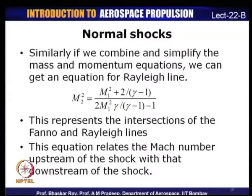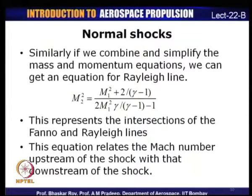Similarly, we can combine and simplify the mass and momentum equations to get the Rayleigh line equation, and correspondingly relate upstream and downstream properties. If we look at these two equations and simplify them, we can relate the downstream Mach number M₂ with the upstream Mach number M₁. We get: M₂² = (M₁² + 2/(γ−1)) / (2γM₁²/(γ−1) − 1). The upstream and downstream Mach numbers can be related through this simple equation, which primarily depends upon the ratio of specific heats — typically 1.4 for an ideal gas.